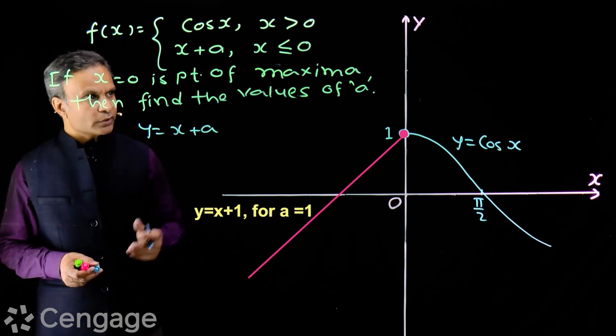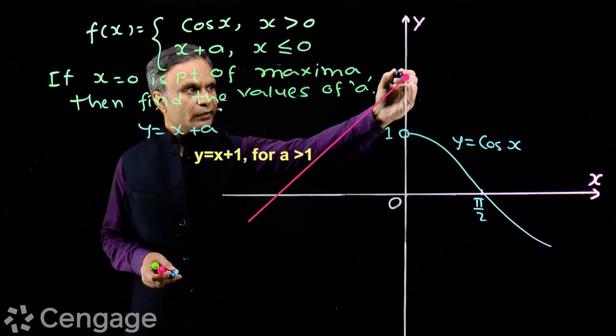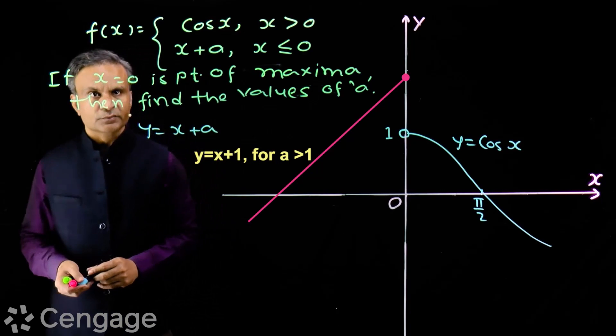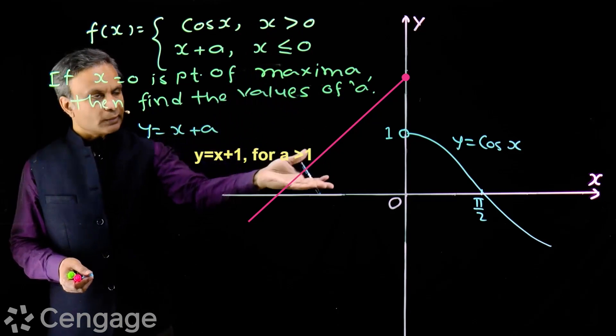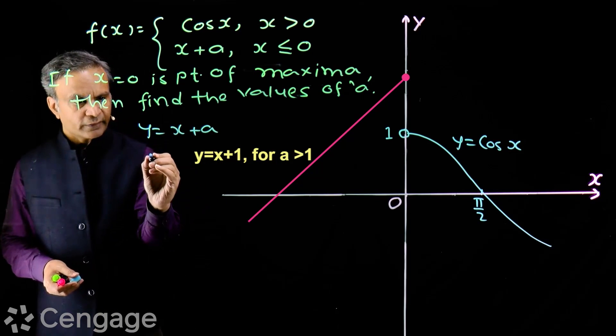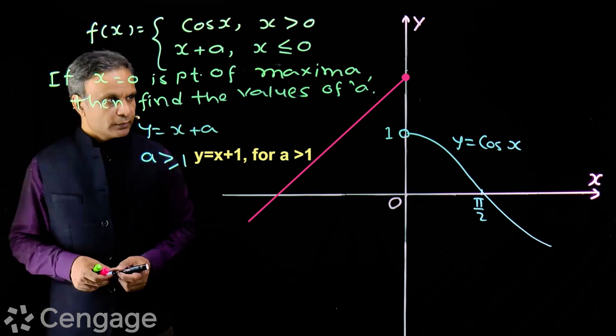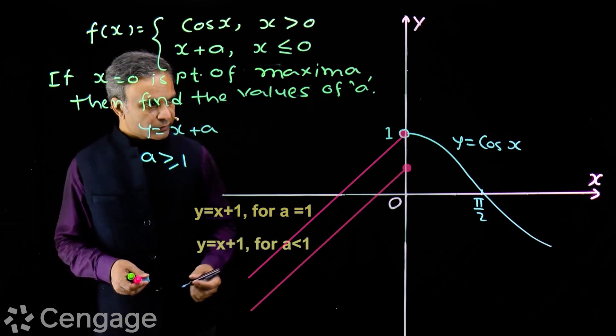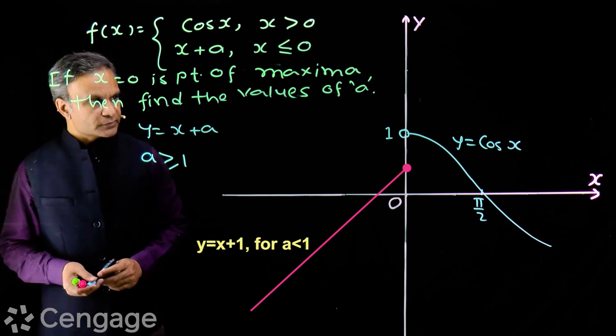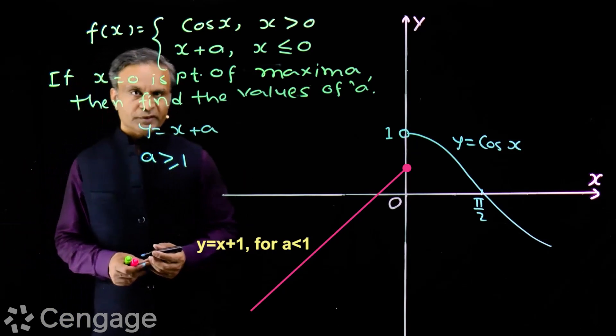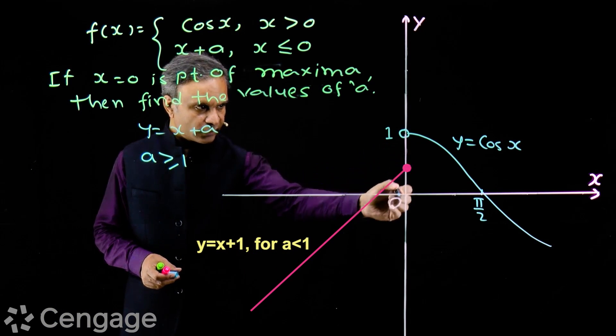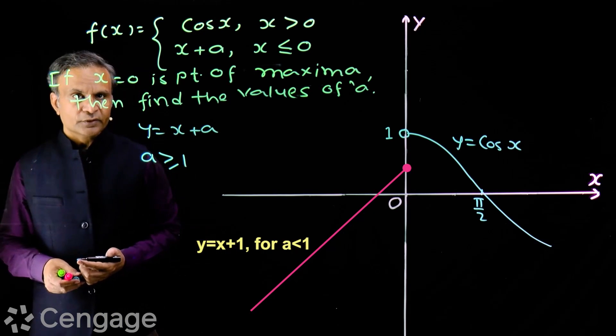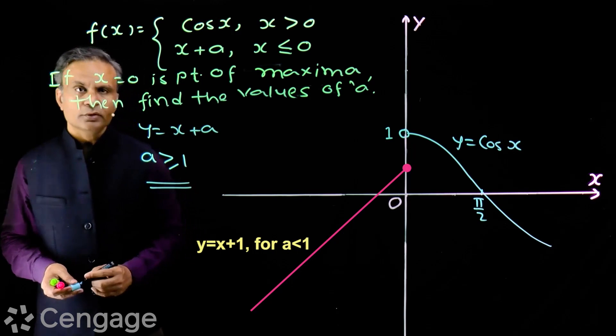And if we take a more than 1, line will be like this, having a filled point here. So in this case also, 0 will be point of maxima. You can take line upward. So we will have a greater than or equal to 1. Now, can we take line below this position? No. If we have the situation, then in this case, 0 won't be point of maxima. So we cannot have a less than 1. So values of a are a greater than or equal to 1.